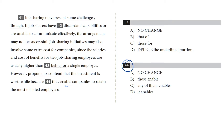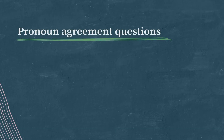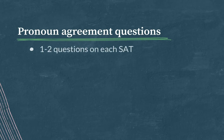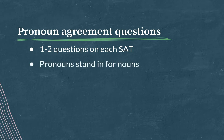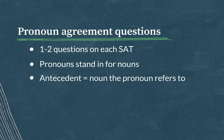These choices are all different kinds of pronouns — some of them are plural, some are singular — and this is therefore a pronoun agreement question. You'll see one or two of these on your SAT. Pronouns, you'll recall, stand in for nouns, and we need to find the antecedent: the noun the pronoun is referring back to.